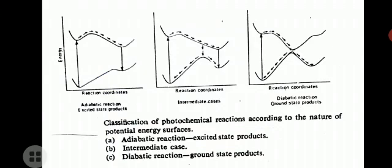Here is a figure showing all three types of cases. The first figure shows the adiabatic reaction, the second shows the intermediate case, and the third shows the diabatic reaction. This is the classification of photochemical reactions according to the nature of potential energy surfaces. In all three figures, the lower curve represents the S0 surface and the upper curve represents the excited state surface.